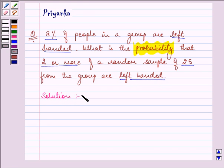So here in this question we are given the value of P as 8%, that is 8 by 100, and we are given the number of people in the group as 25.